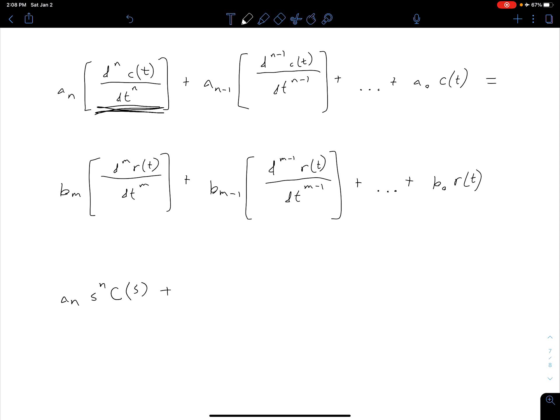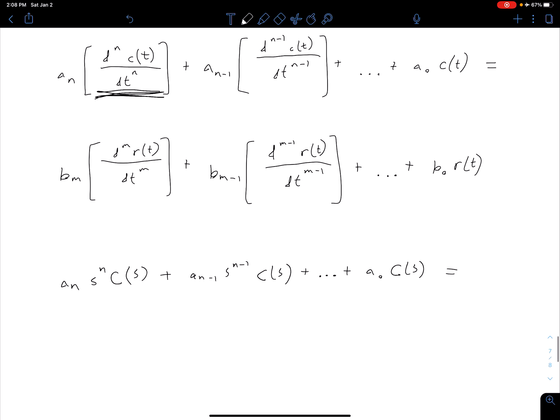So if we keep on doing that in the same way, we have plus a sub n minus 1 times s to the n minus 1 times C(s). Again, that's the only term because we have no initial conditions, plus so on and so forth until we get down to our last term on the side of the equal sign, which is going to be a naught times C(s).